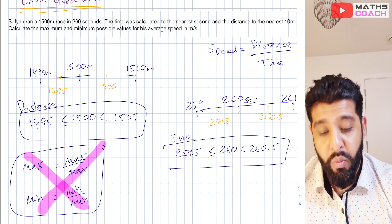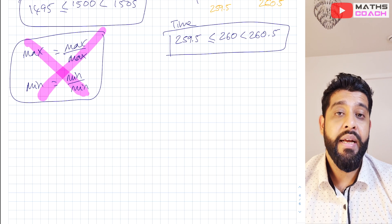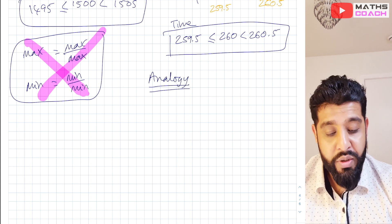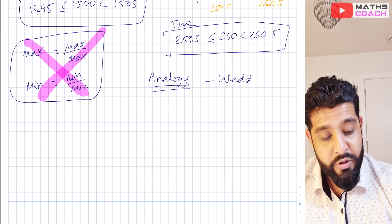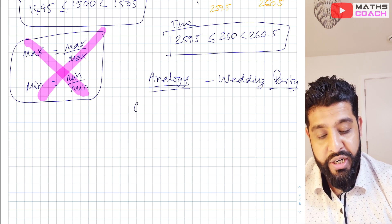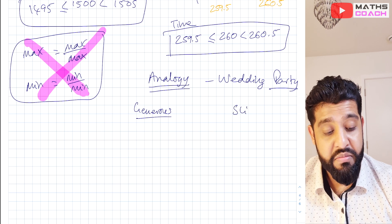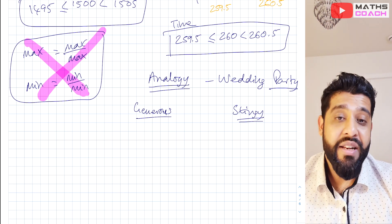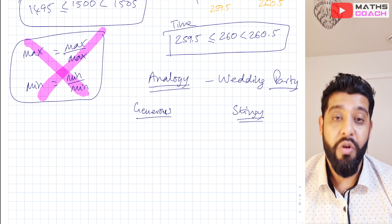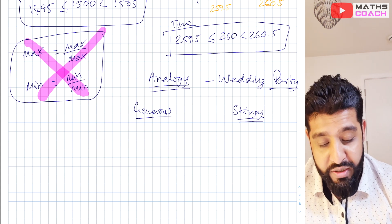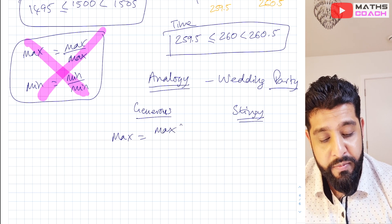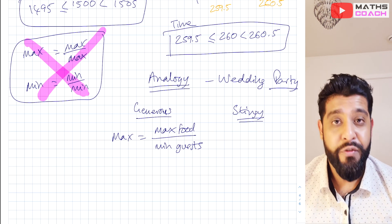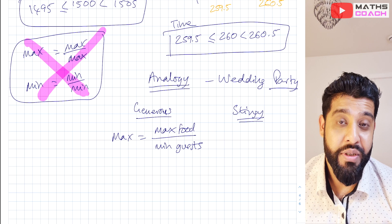I'm going to explain through an analogy. When you divide by a large number, your result becomes smaller; when you divide by a small number, it becomes bigger. Imagine a wedding with a generous person and a stingy person. The generous person wants their guests to eat a lot, so they order maximum food and distribute it among the minimum number of guests — that way everyone gets plenty, giving a maximum amount per person.